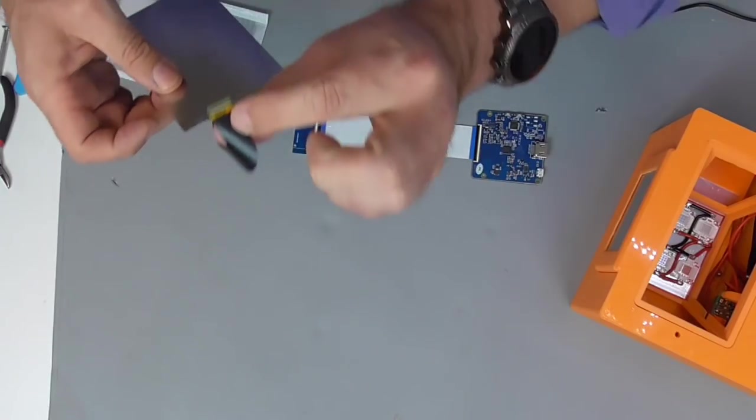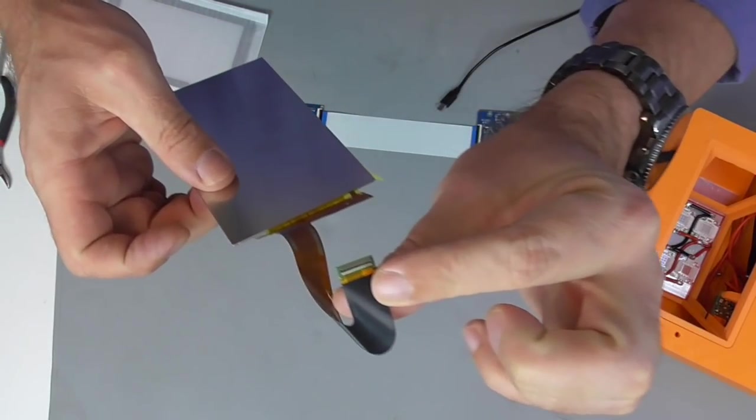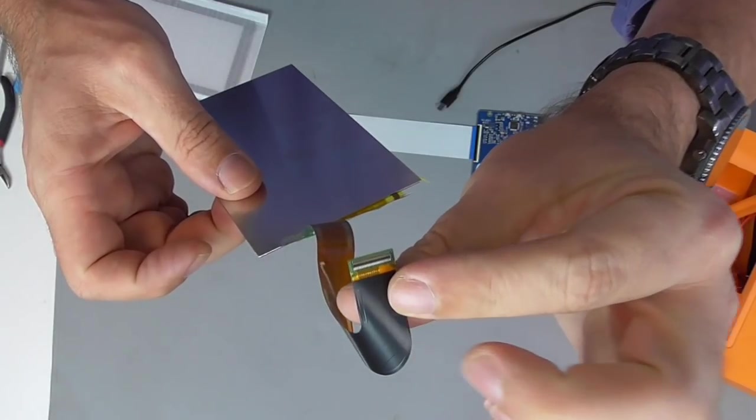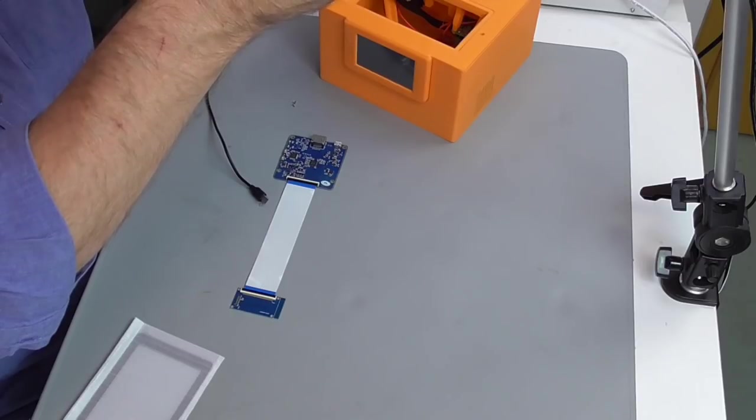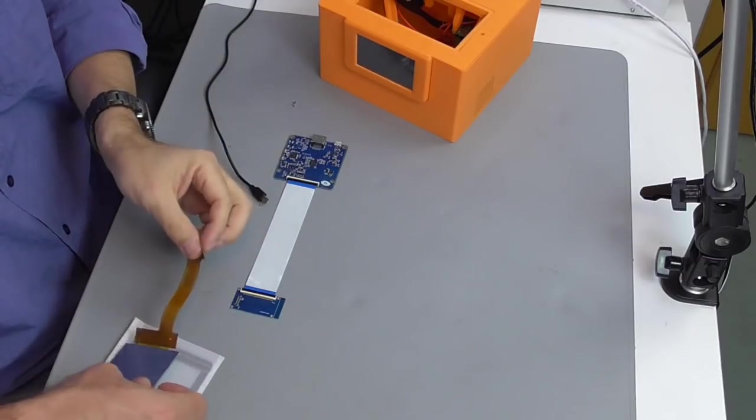This rectangular connector at the end of the flat ribbon cable needs to get carefully aligned with the corresponding rectangular connector on the adapter board. And then push it down carefully until you can hear a clicking noise.